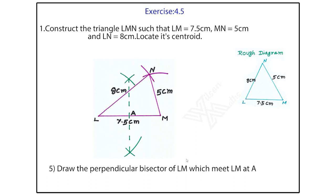Fifth step. Draw the perpendicular bisector of LM which meet LM at A. From L, LM, 7.5, take more than half. Keep it at the point L.